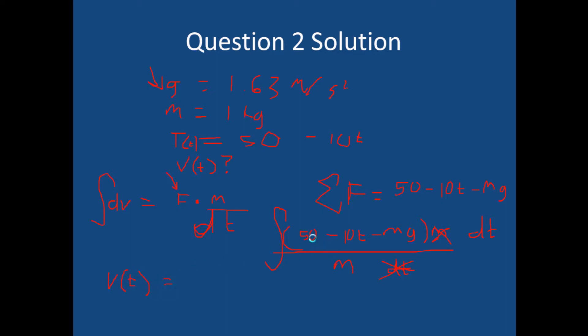So v of t equals, so integrating this, this is the constant because it doesn't depend on t, this depends on t so that will do something, and that's also a constant, in which case m looks like it's going to cancel out there. So what we do here is we have 50 over m, and we multiply that by t since we're integrating. Then we'll have minus 10 t over m. To integrate that we'll have, let's see what would that be, it'll be t squared, it'll be 5 t squared, minus 5 t squared over m.